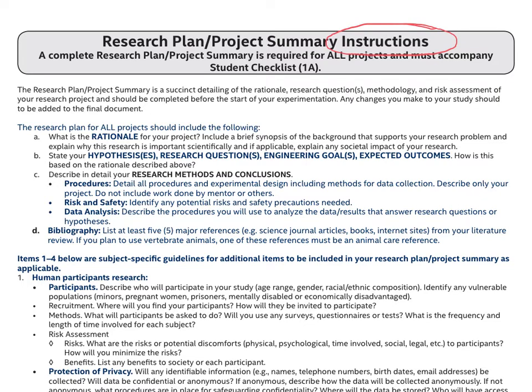The research plan contains at least four basic elements. The first element is called the rationale for the project. This is actually something new this year that hasn't been asked in the past. It used to be that the student just needed to identify a research question or an engineering goal and state a hypothesis or expected outcome and do the rest.